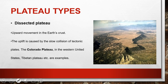Now let's discuss the types of plateaus. First is the dissected plateau. It is formed by upward movement in the earth's crust — an upliftment which happens because of the slow collision of tectonic plates. For example, the Colorado Plateau in the western United States and the Tibetan Plateau. The Tibetan Plateau is an example of a dissected plateau formed by the collision of the Asian and Indian tectonic plates.